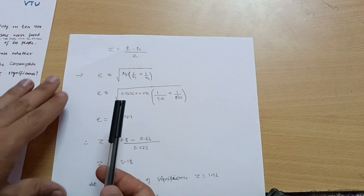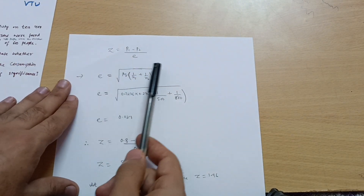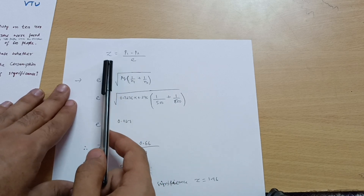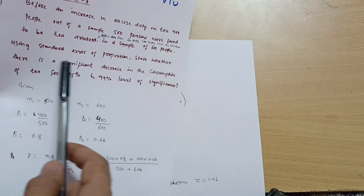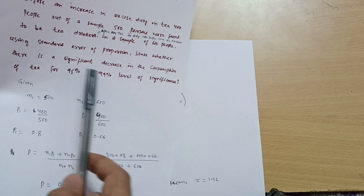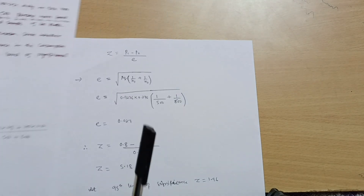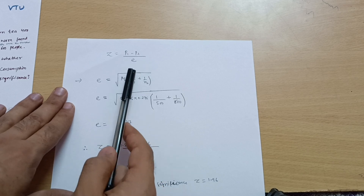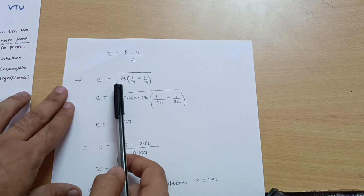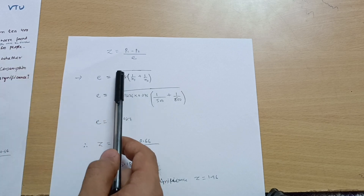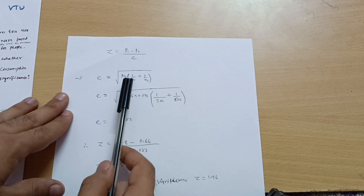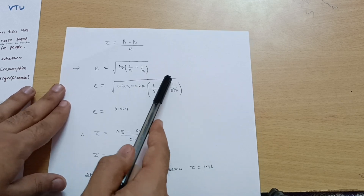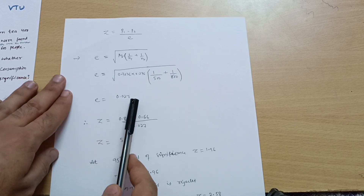Using the standard error of proportion, the formula is: SE = √(pq · (1/n1 + 1/n2)). To find Z, we use Z = (p1 − p2) / SE. First, calculate the standard error: SE = √(0.7236 × 0.276 × (1/500 + 1/600)), which gives SE = 0.027.